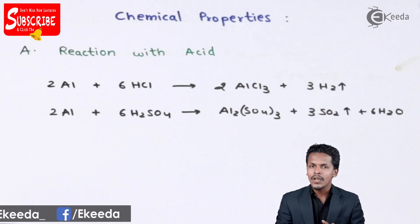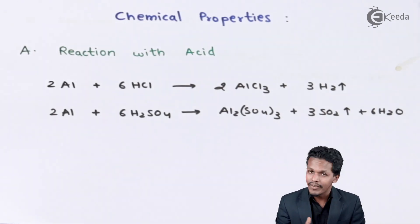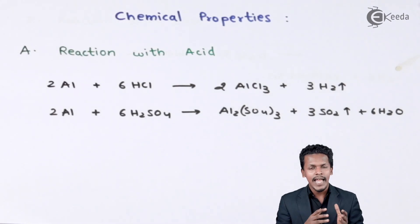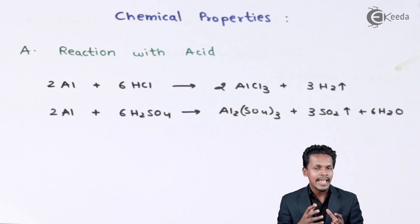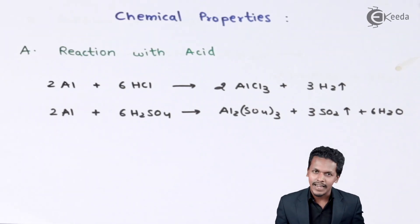Now the main thing is why it doesn't react with the other mineral acid, that is nitric acid. The reason behind that is aluminium forms an oxide layer on it that acts like a protective layer, and that's why nitric acid doesn't react with aluminium. While the other two mineral acids like HCl and H2SO4, they can easily react.